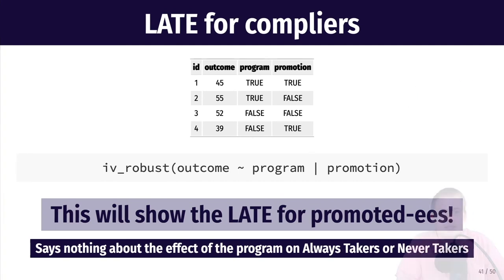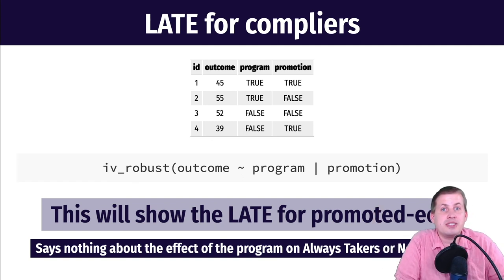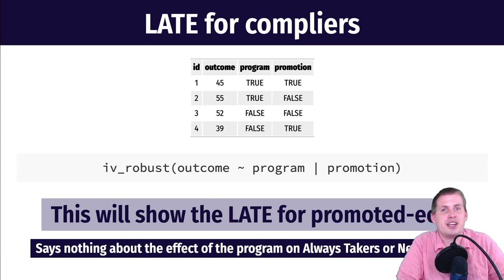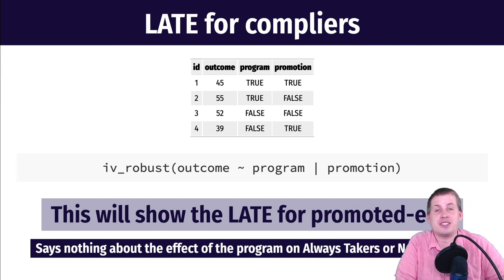We know nothing about the effect of the program on always takers or never takers — we're only looking at compliers — but it still gives us useful information about the effect of the program on people who would listen to the encouragement. This is a unique way of measuring the causal effect of a program without randomly assigning people to use it. You just randomly assign people to think about using the program, and it works. Consider this for your final projects, especially if you're working with a program that has universal access and you can't ethically randomly assign people to not participate.